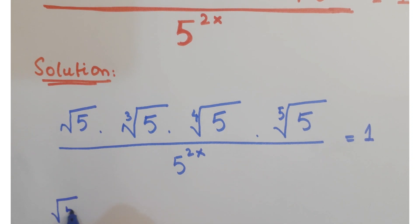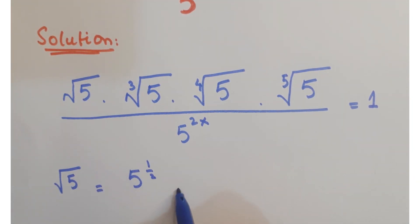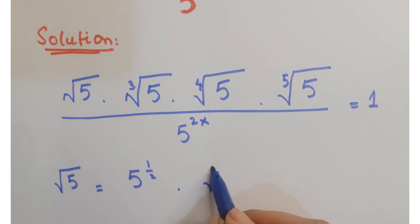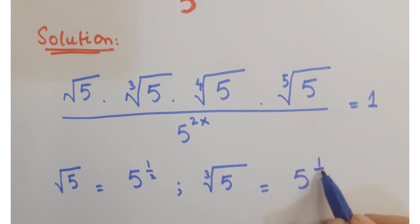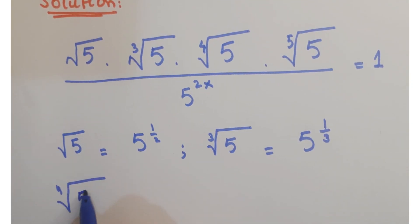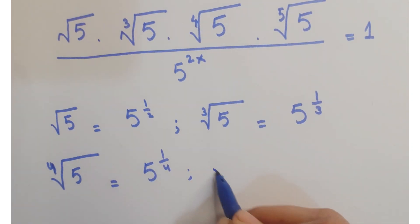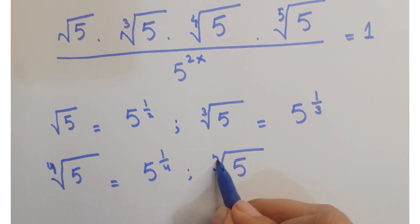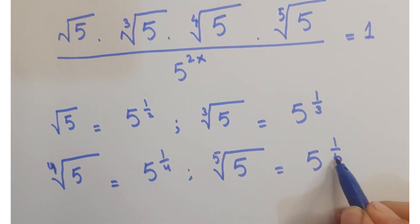As we know, this square root of 5 is equals to 5 to the power 1/2, and this cube root of 5 is equals to 5 to the power 1/3, and the 4th root of 5 is equals to 5 to the power 1/4, and the 5th root of 5 is equals to 5 to the power 1/5.